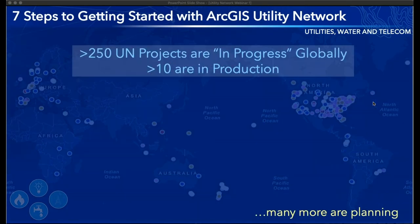At a global scale there is significant momentum in the adoption of the ArcGIS Utility Network. Utilities are rapidly moving their project deployments from planning to pilots and into implementation at an accelerated and exponential rate. Following the initial early adopters, there are now over 10 organizations across the globe that are live on the Utility Network, and our latest analysis indicates over 200 organizations with projects now in progress. The geometric network with ArcMap served utilities well for the past 20 years, but a modern GIS is quickly becoming the cornerstone for managing a modern network.